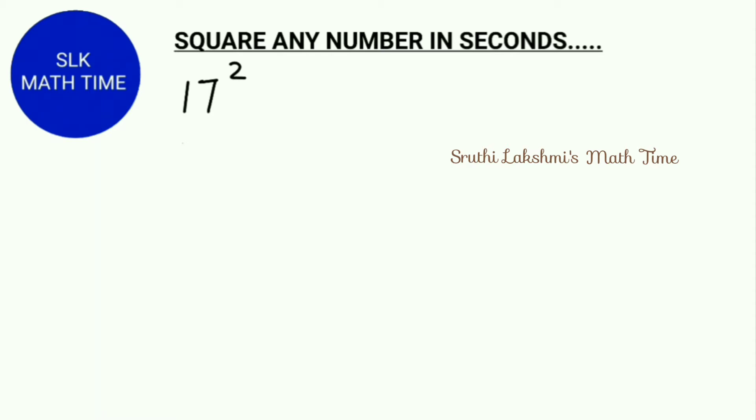17 square. So 17 is near to the base 10. 17 is 10 plus 7. So we add this 7 to 17. Then we put a slash. Then we square this 7. So 17 plus 7 is 24 and 7 square is 49.